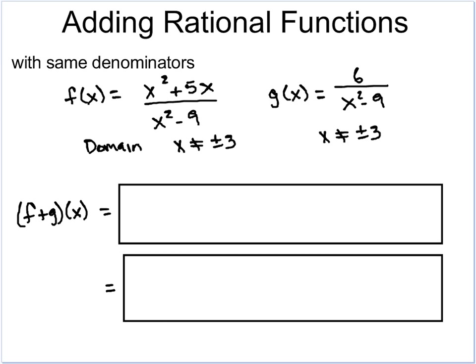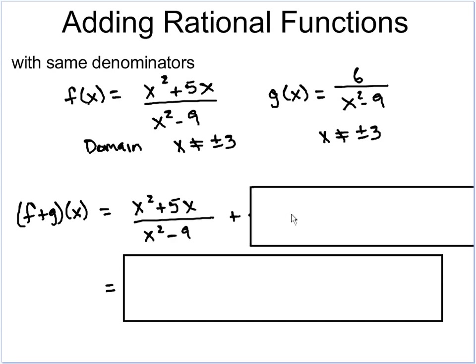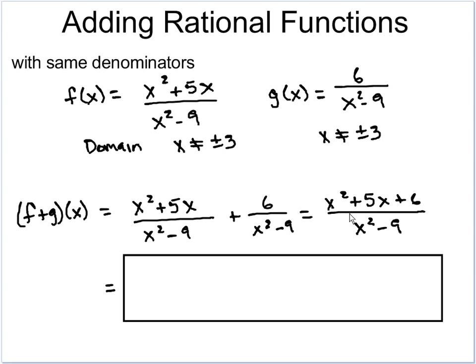Now we're going to add them together. We put the addition sign between them, and when we add, we literally just add the tops — since we're adding fractions, the denominator stays the same: x² - 9. Just like when you're adding regular fractions, sometimes we have to reduce them. When we're looking at quadratics or polynomials, reducing means we have to factor the problems out to see if we can cancel anything. It's not as simple as regular numbers.